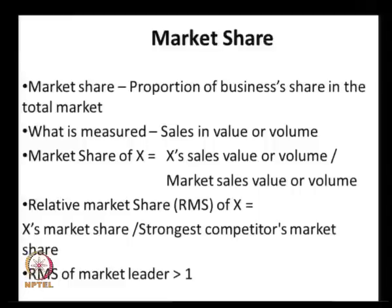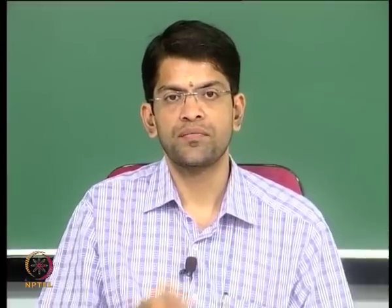The market share of business X is the sales value — total rupees generated — or total units of X sold, divided by total sales in that market including all competitors. For example, the market share of TVS Motor is the number of bikes TVS sells — or total rupees generated — divided by the total number of bikes sold by the entire two-wheeler industry, including Hero Honda, Bajaj, TVS, and all others.